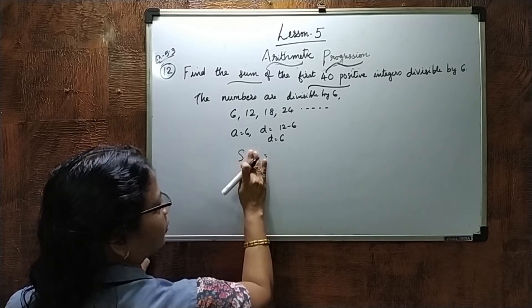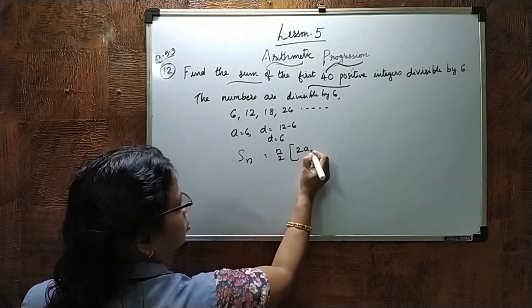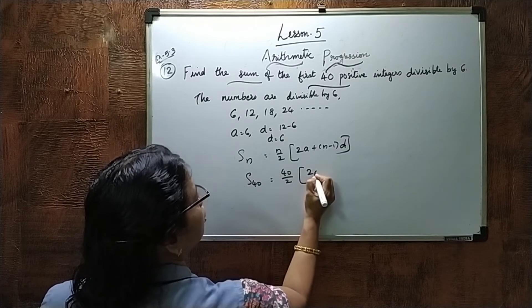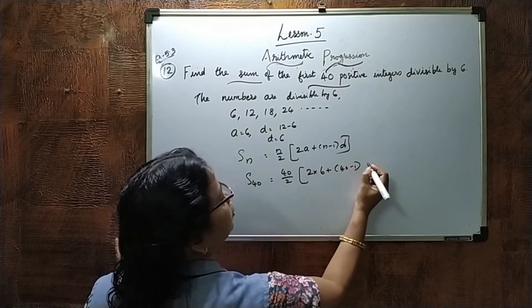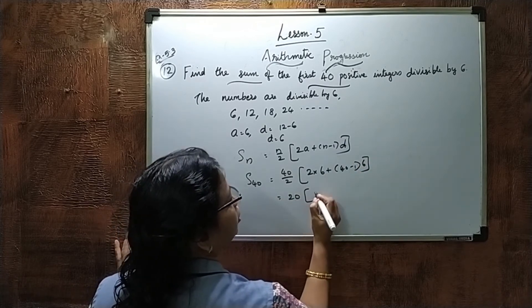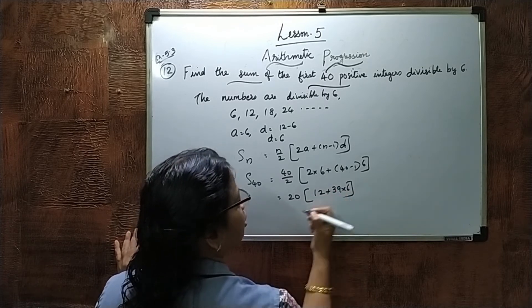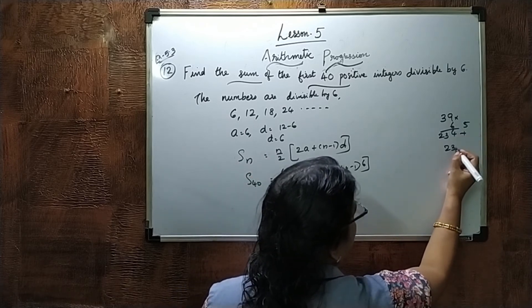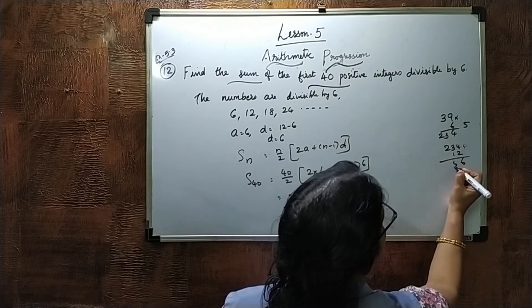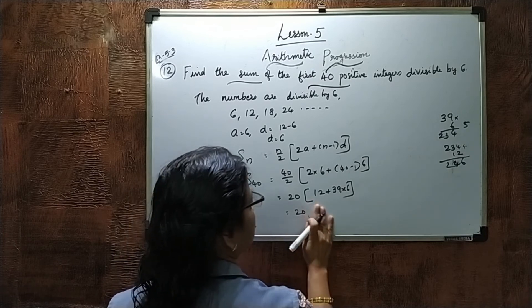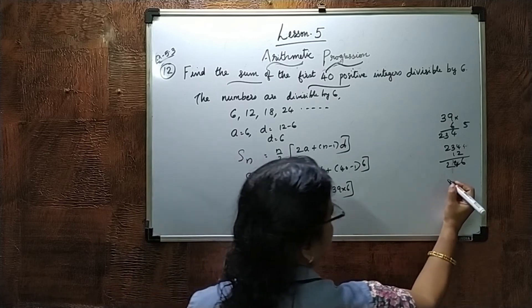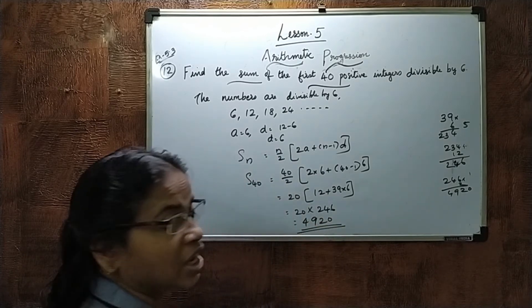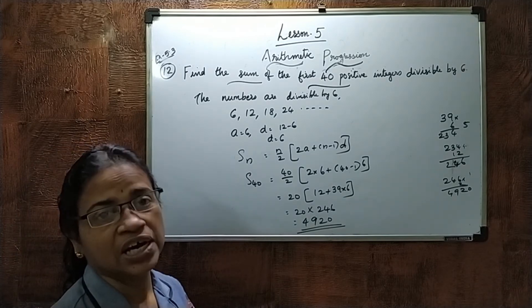S40 equals 40 by 2 into 2A plus (N minus 1) into D, which is 20 into 2 into 6 plus 39 into 6. That gives 20 into 12 plus 234, which is 20 into 246, so S40 equals 4920.